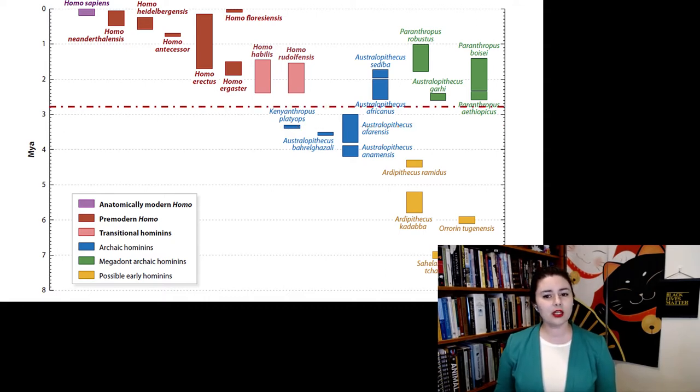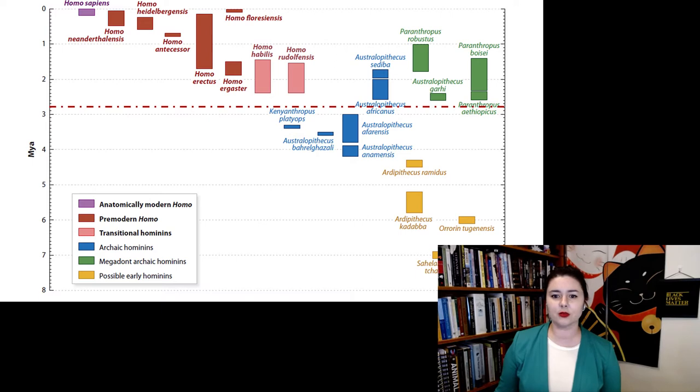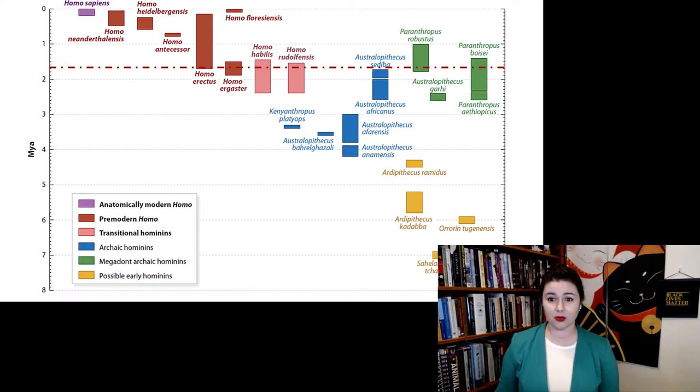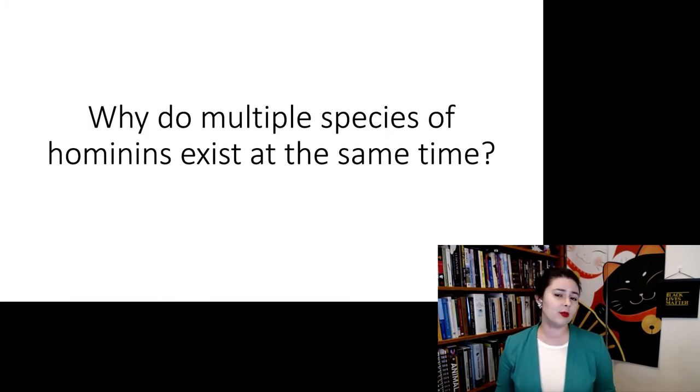Now, later in time, oh, that's a weird place to put that line. Let's look at this one instead. Now we have multiple different species. We have Paranthropus boisei, Paranthropus robustus, possibly Australopithecus sediba if it's a little bit later. Then we have Homo rudolfensis, Homo habilis, Homo ergaster, and Homo erectus. That is just a lot of species that could potentially all be running around Africa at the same time. So the question really is, why do we have multiple species of hominins at the same time?